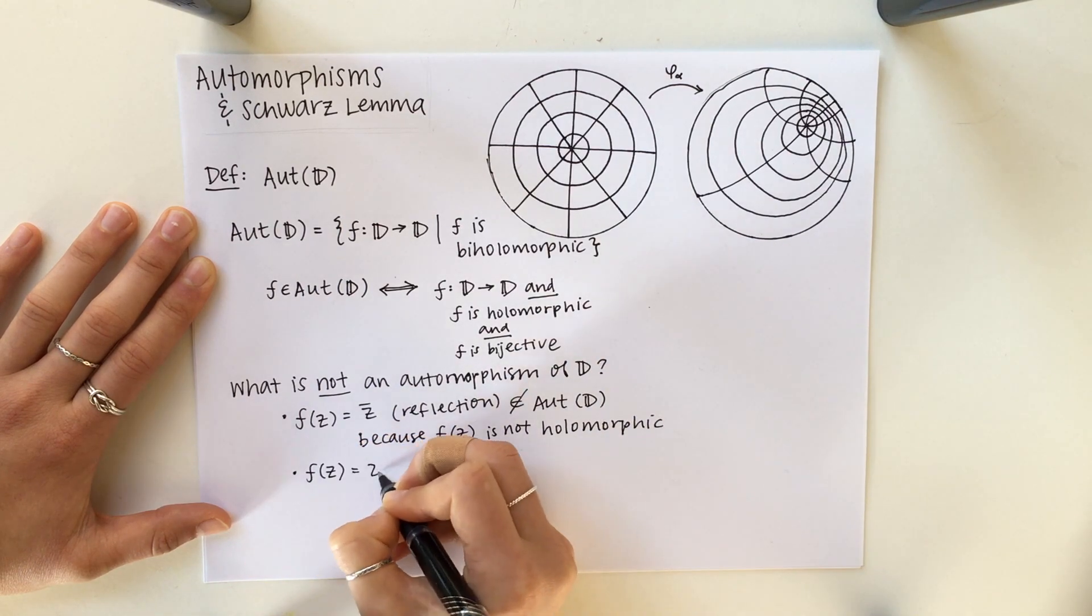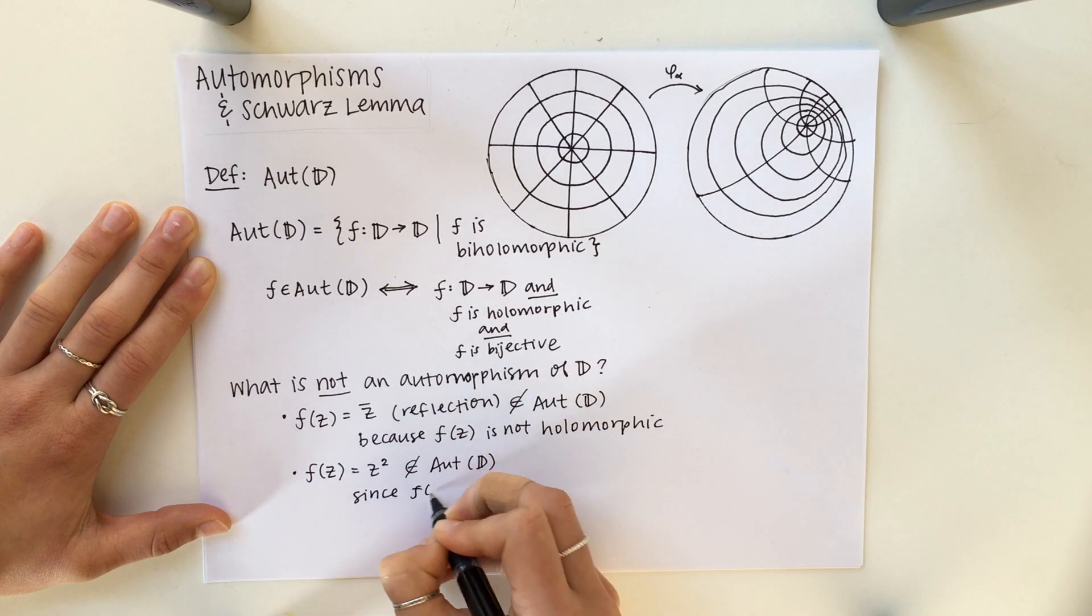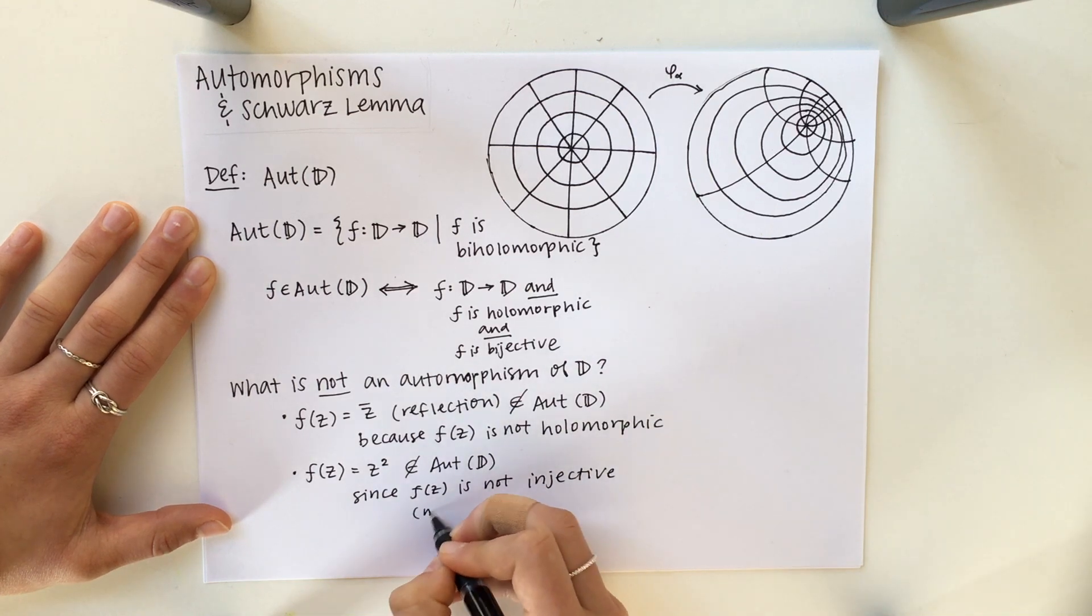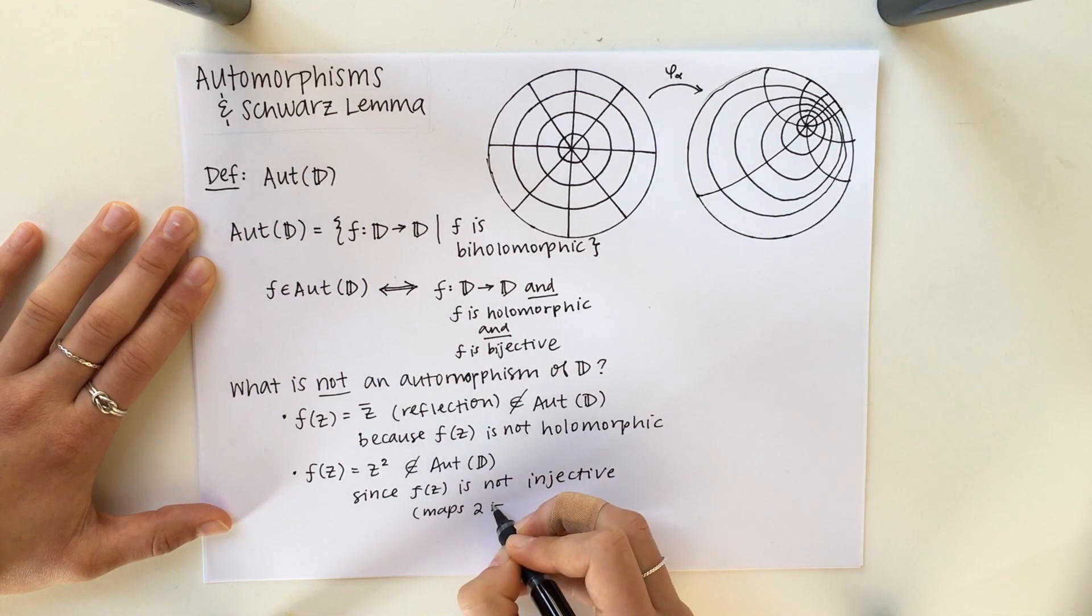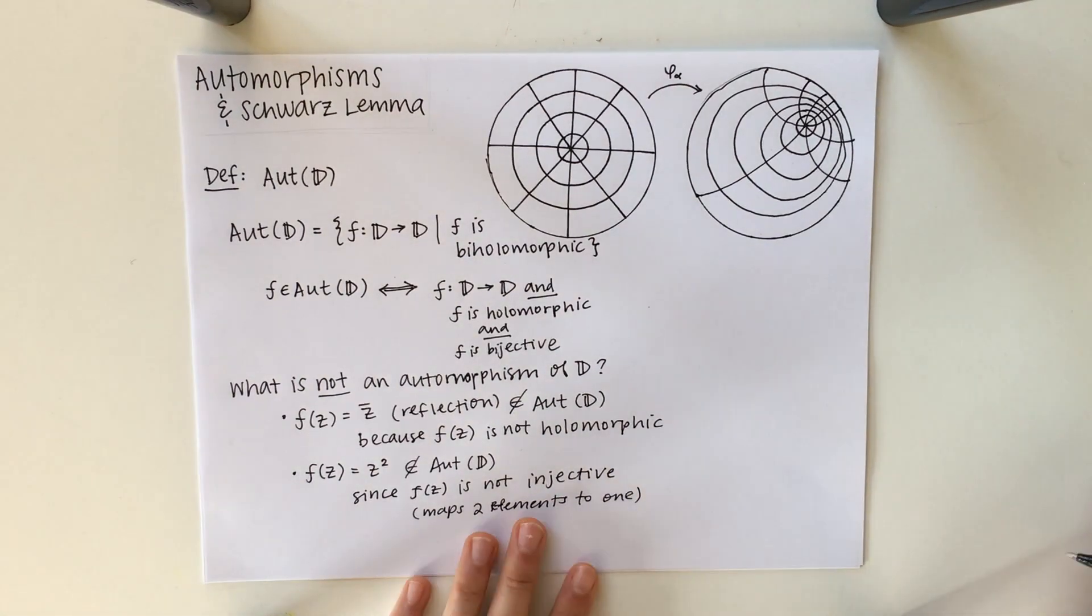Another one is F of Z equals Z squared. But again, this is not an automorphism of D because F is not injective since two elements can be mapped to one.